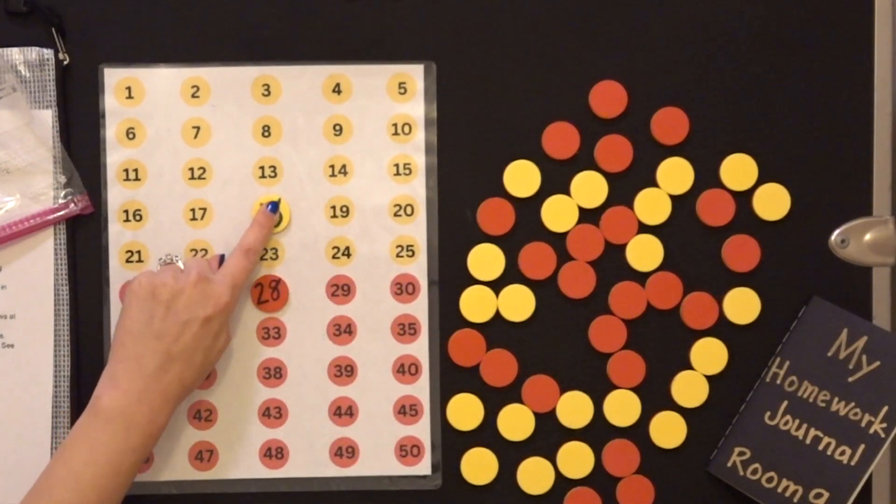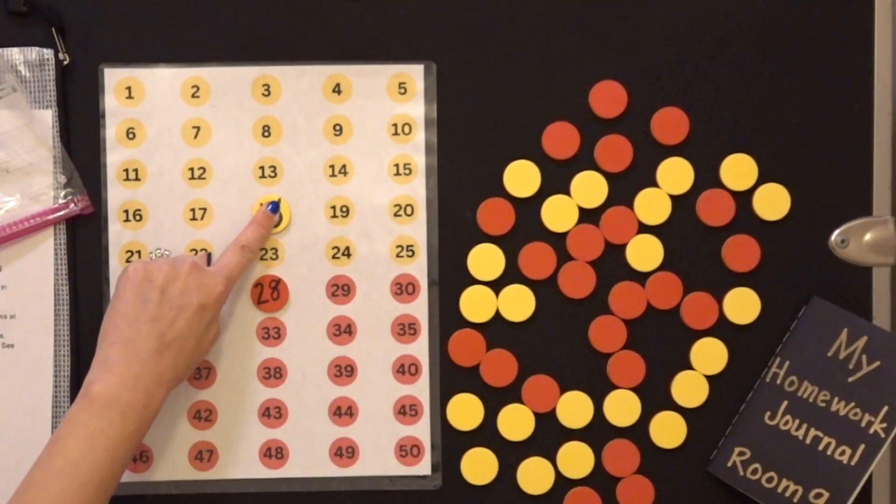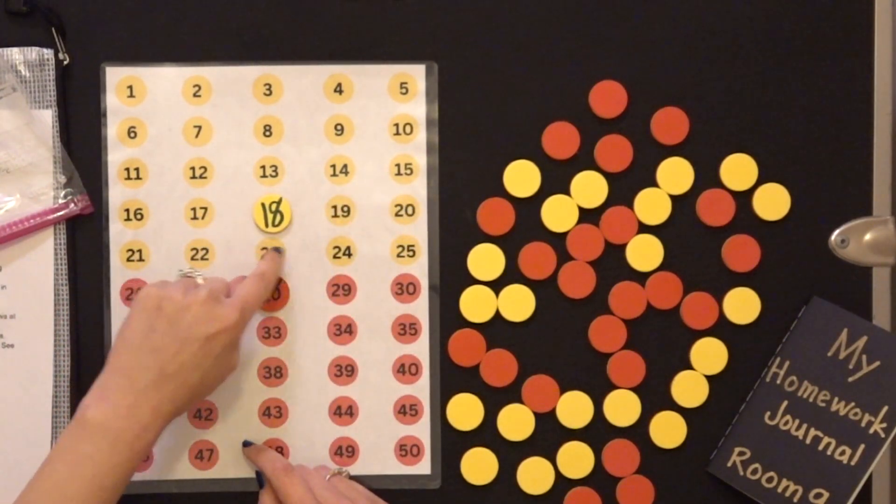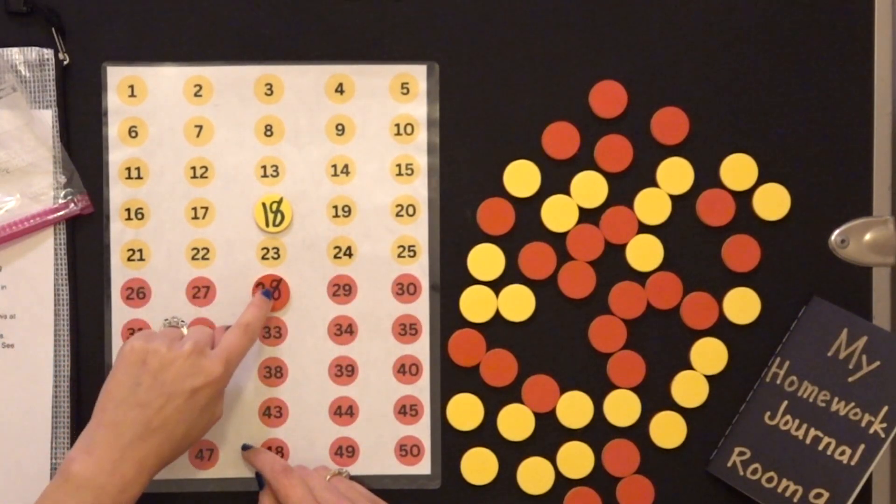So I'm going to put my finger on 18. And then I'm going to count on to 28. 19, 20, 21, 22, 23, 24, 25, 26, 27, 28.